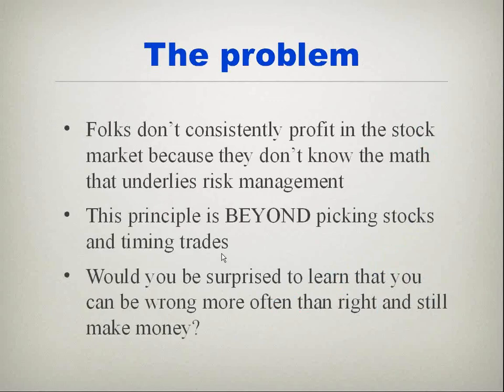Which is more realistic: taking a risky position, suffering a 50% loss, and needing a 100% gain — or trading with protection, having a 5% loss, and needing only a 5.62% gain to break even? We don't consistently profit because we don't understand the underlying math. It's beyond picking stocks and timing trades — it's about limiting your risk, staying in protected positions so you never scramble to take on riskier positions just to get back to break even.